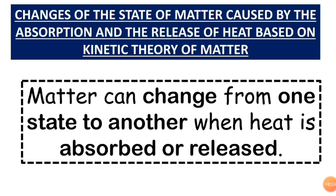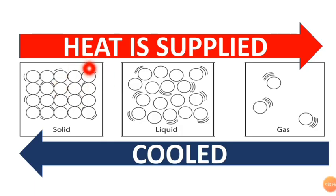The changes of state of matter caused by the absorption and the release of heat based on the kinetic theory of matter. Matter can change from one state to another when heat is absorbed or released. This is the arrangement of solid, liquid, and gas.